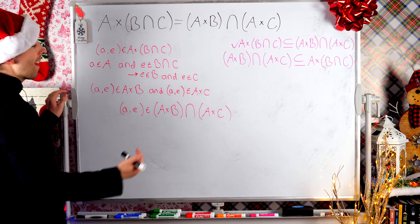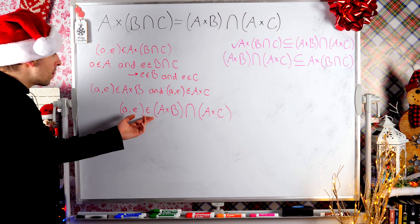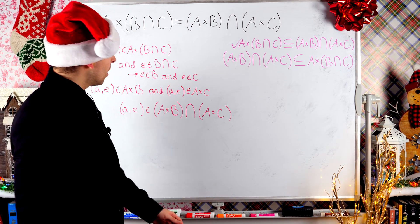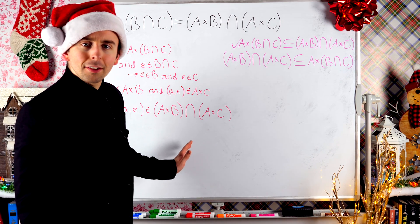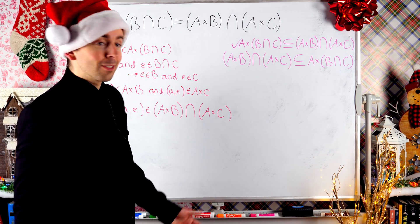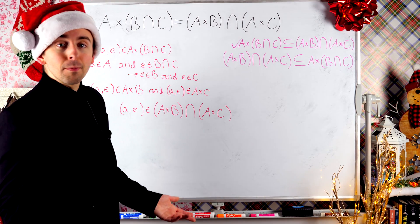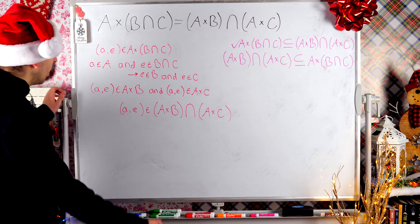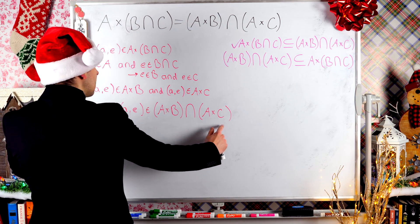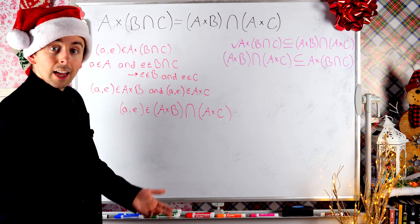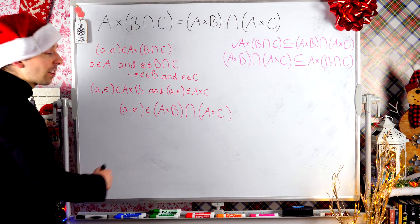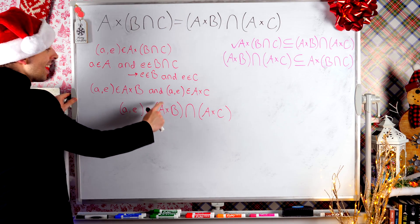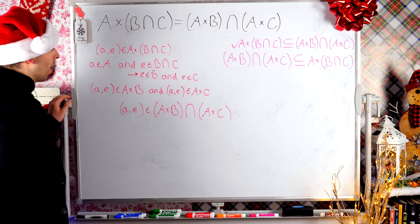Suppose that the ordered pair (a, e) is an arbitrary element of this intersection. I know that the elements of that intersection are ordered pairs because it's an intersection of Cartesian products — Cartesian products only have ordered pairs. So any arbitrary element has got to be an ordered pair. If (a, e) is an element of this intersection, then by definition it's got to be an element of the two sets that are getting intersected. So (a, e) is an element of A cross B, and (a, e) is an element of A cross C.